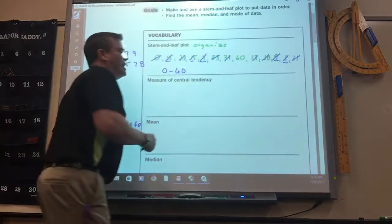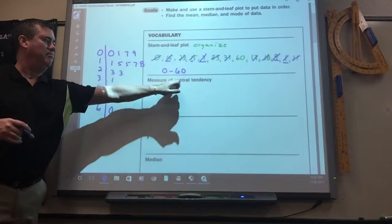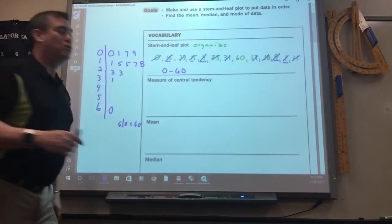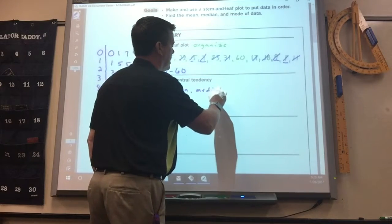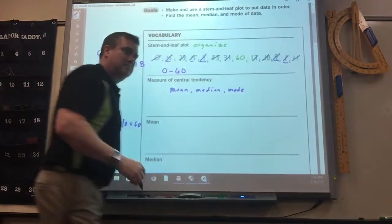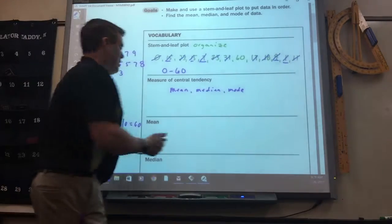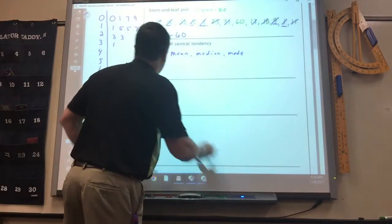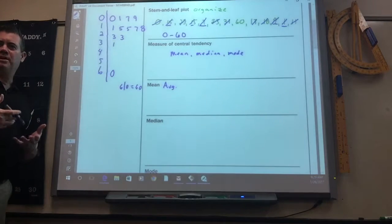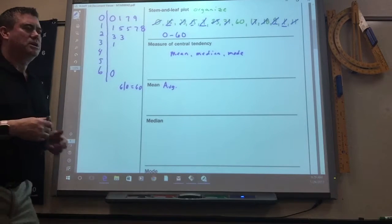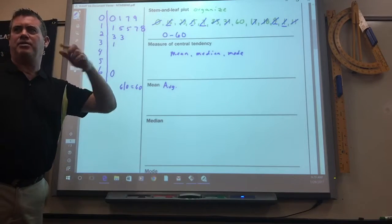Measure of central tendency. That's numbers that tend to go to the middle center, which are mean, median, and mode, which you've done since elementary. You ever remember how to find mean, median, and mode? Mean is the same thing as average. The words are different, but they mean the same thing. So do you ever remember how to find the mean? Add them together, divide by how many there are.